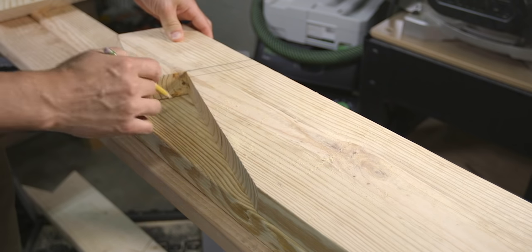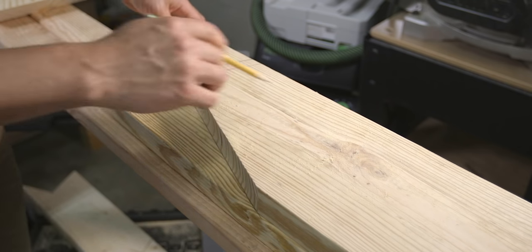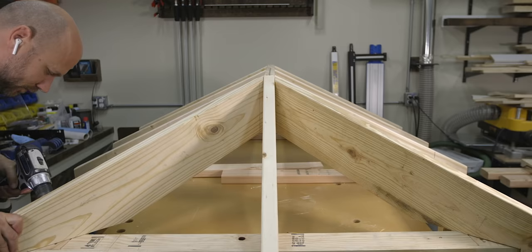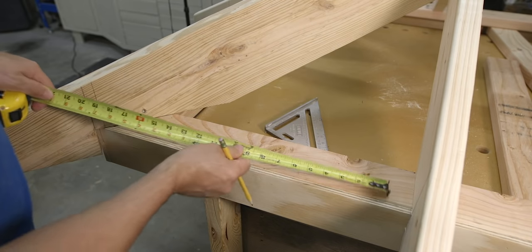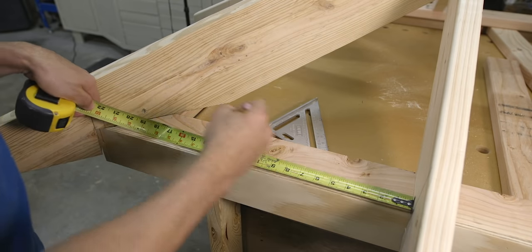Because this hip fits, use it as a pattern to cut out the remaining hip and install it. The last thing to do is lay out and cut our jack rafters. Because this roof is laid out 16 inches on center,